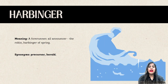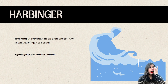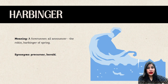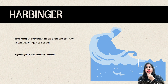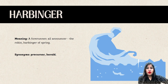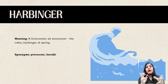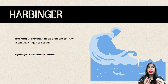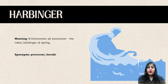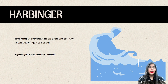The last word for the day is harbinger. A harbinger is a forerunner — someone or something that tells about something bad going to happen in the future. Example: 'The robin, harbinger of spring' — something that announces or signals what is coming. Synonyms would be precursor and herald.